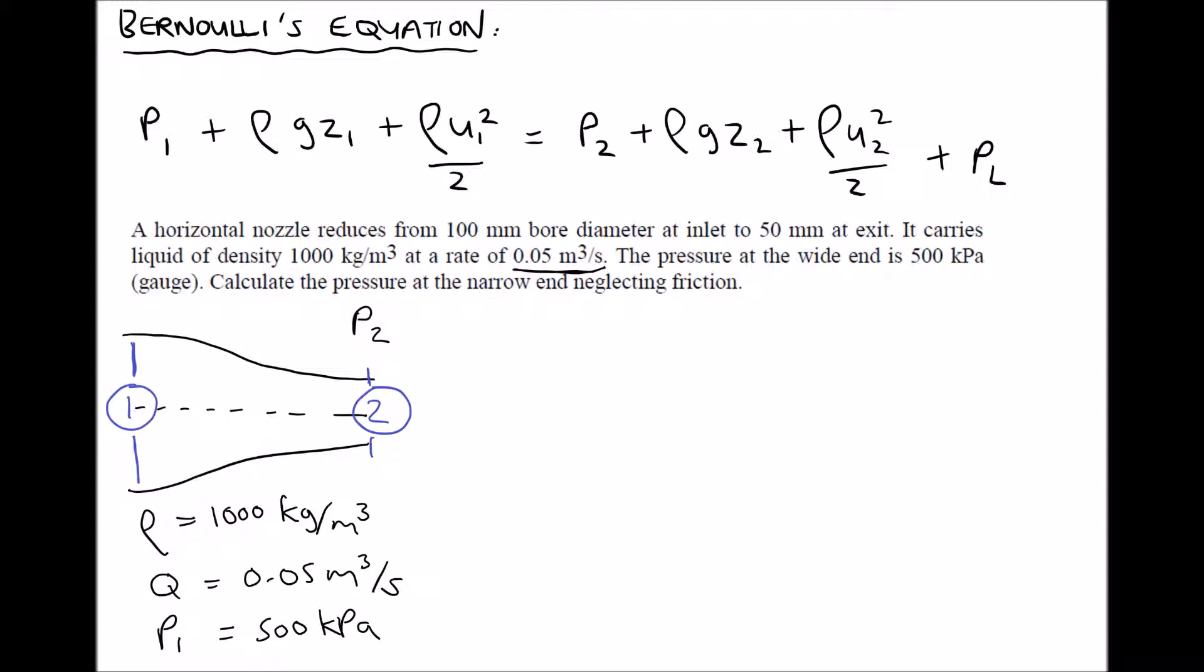It also tells us to neglect friction. So let's refer back to our Bernoulli's equation. The fact that at the end of the question it says neglect friction means we can get rid of our term on the far right-hand side. If we go back to the far left-hand side, P₁ is given. The next term is ρgz₁. Well, as this pipe is horizontal, if we take our datum at the center of the pipe, then z₁ and z₂ are both going to be zero. Anything times zero is zero. Therefore, as neither side is elevated in relation to the other, we can get rid of ρgz₁ and we can get rid of ρgz₂.